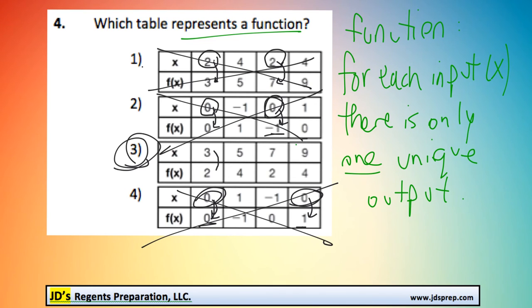We can see that for each input, there is one unique output. In fact, x never repeats itself here. So 3 is the correct answer for this problem.